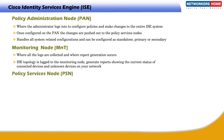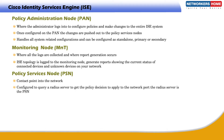The Policy Services Node is the contact point into the network. Each switch is configured to query a RADIUS server to get the policy decision to apply to the network port. The RADIUS server in this context is the PSN. In larger deployments, you use multiple PSNs to spread the load of all the network requests.